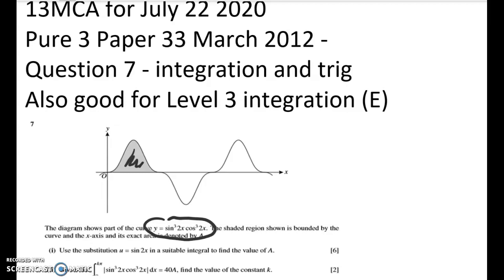So the first thing I think when I look at that is that we don't know the limits of integration that we're going to be using to figure out what A is. Because in part one, we're told to use a substitution to find the value of A. And you can see that it's 6 marks, so that's quite a lot of work.